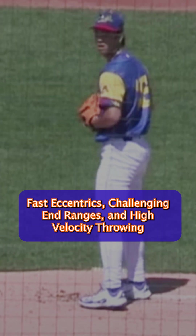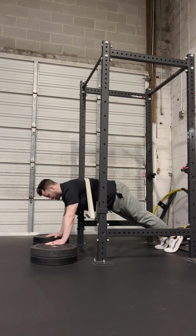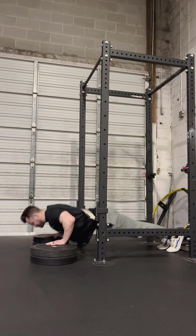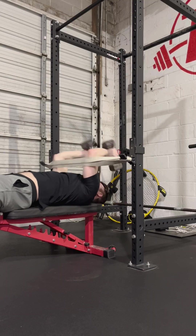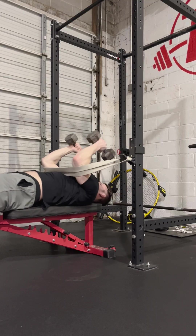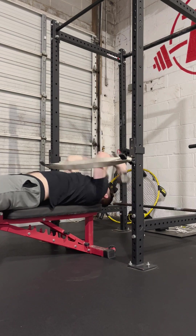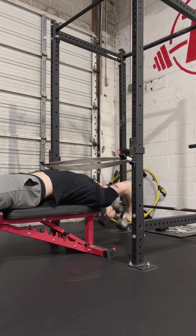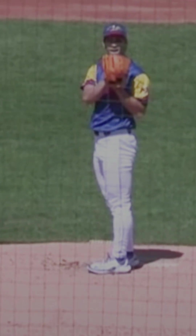In order for athletes to use their bodies like a spring, eccentric and isometric actions are exceptionally important, as the eccentric action places a pre-stretch on the muscle tissue. Eccentric training, especially in a traditional sense, tends to mean slow tempo. However, to derive the greatest throwing-related performance benefits, high-velocity eccentric training is the ticket.